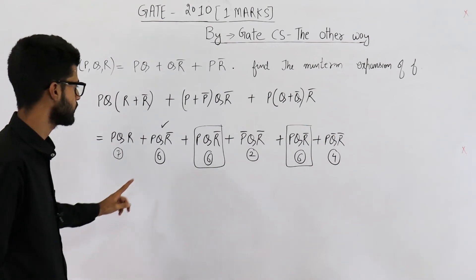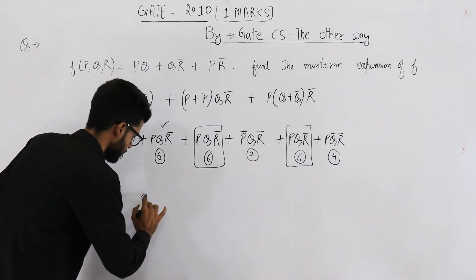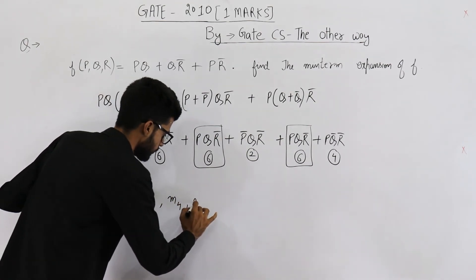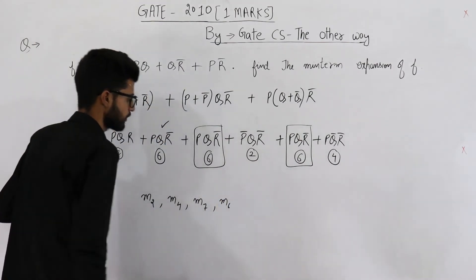So the minterm expansion is m2, m4, m6, m7. It is m2, m4, m7, m6.